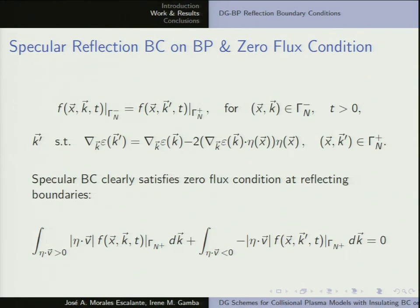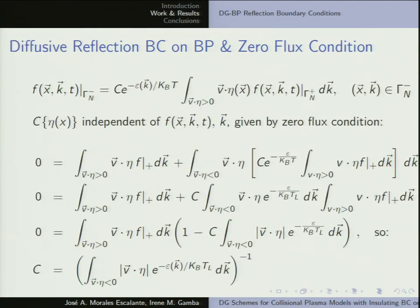For the specular case, it's physically intuitive: you have your K momentum and it reflects back. The PDF defined at the boundary gives a balance — it's the same physics. For diffusivity, you have your Maxwellian with function sigma and parameter C. If you study the zero-flux condition with this boundary condition — this is the inflow boundary, this is the integral over the outflow — then sigma and C are chosen precisely to balance the zero flux at that boundary.